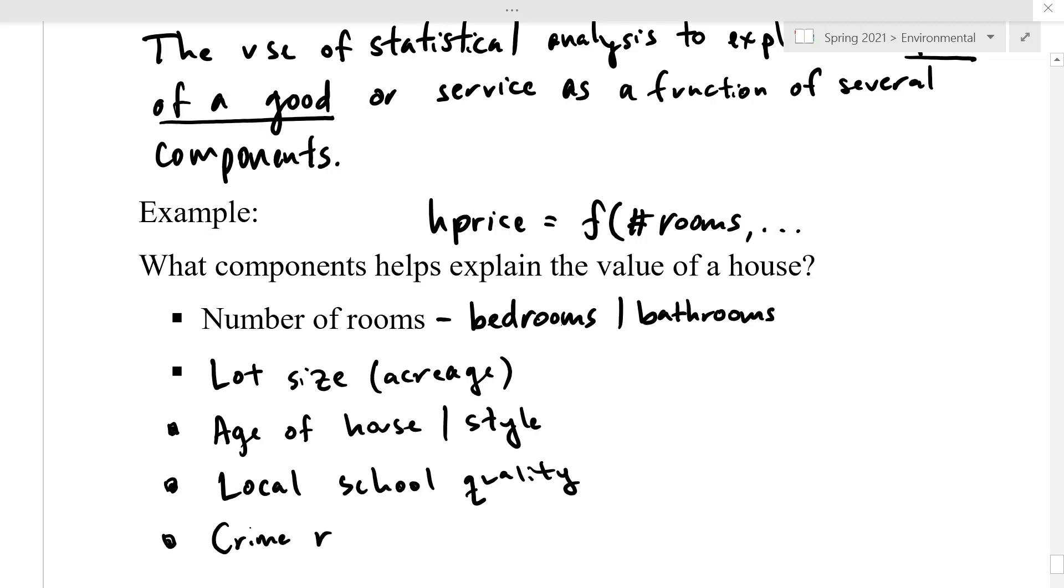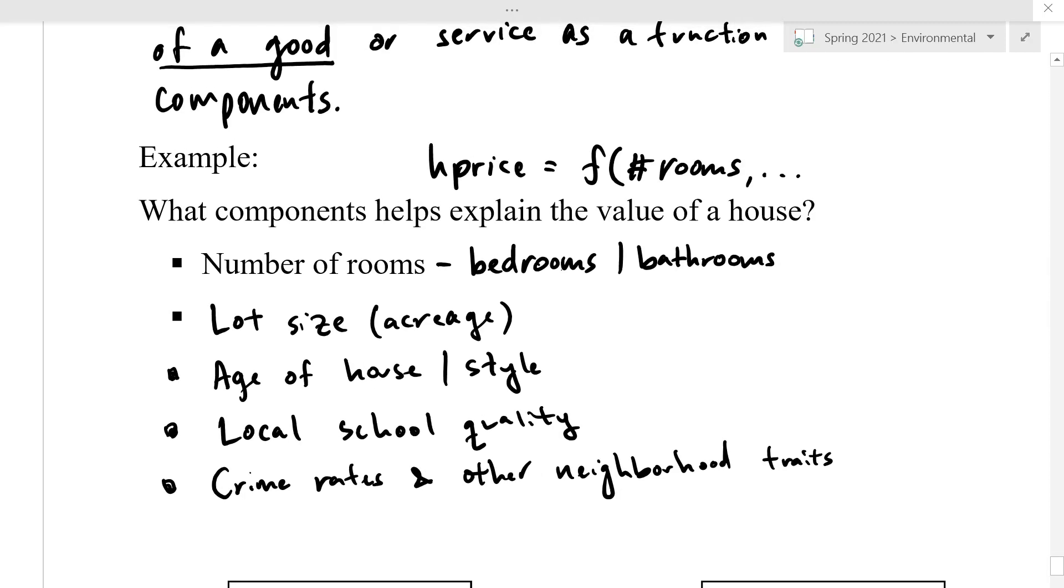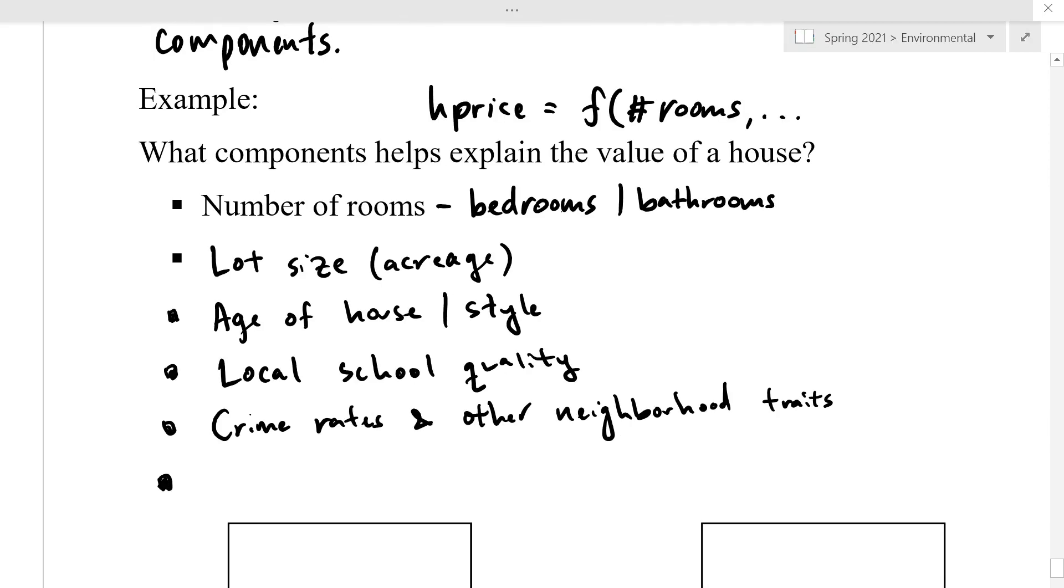What else is going to affect it? Maybe something like local school quality, crime rates, or maybe other neighborhood traits. You might think about the average incomes in the neighborhood, or the walkability of the neighborhood, or the distance of the neighborhood to nightlife or other amenities. But where the environment comes in is that it could also be a function of the surrounding air quality or natural recreational opportunities.